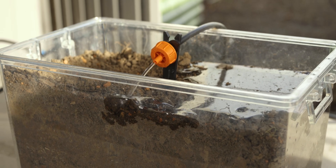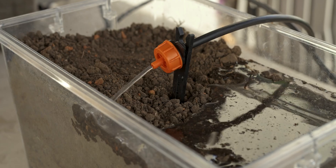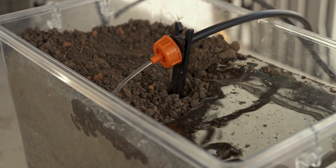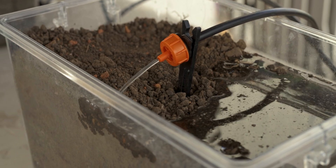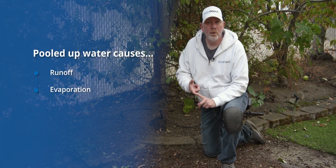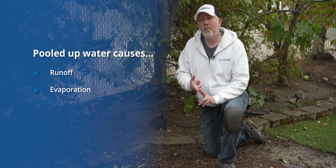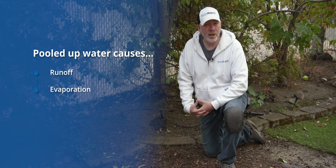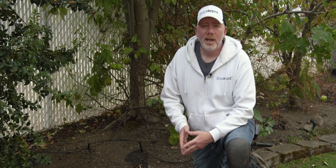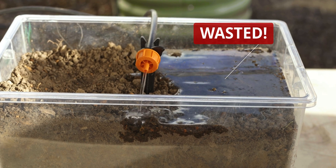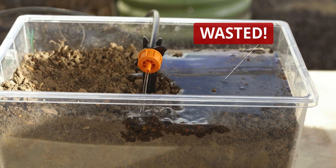If your emitter flow is too fast, water is going to build up on the surface. And when water builds up on the surface, a couple different things can happen — it can either start to run off or it can evaporate, neither of which are desirable in an irrigation system. If your water is running off or evaporating, you're basically wasting water because it's not getting to your plants.